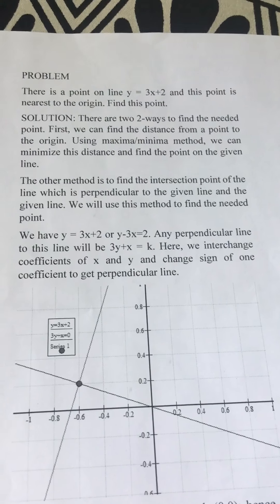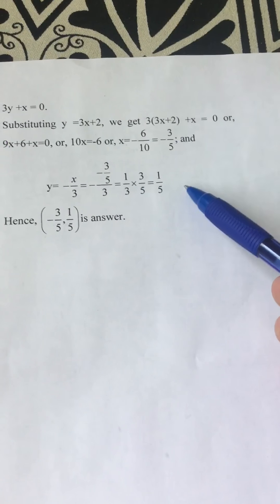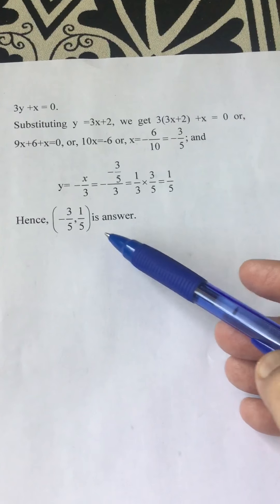And y = -x/3, that is -(-3/5)/3, minus minus cancels and we get (3/5)/3 = 1/5. Hence the given point is (-3/5, 1/5) is the answer.